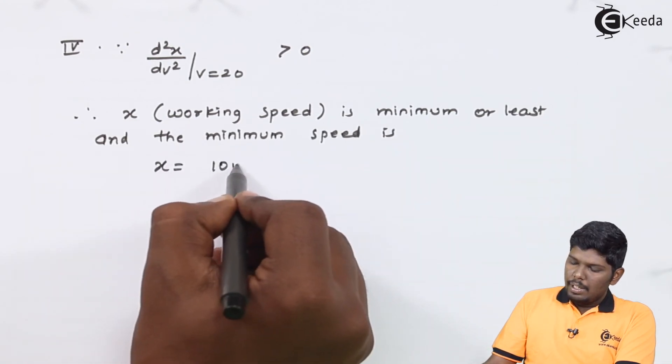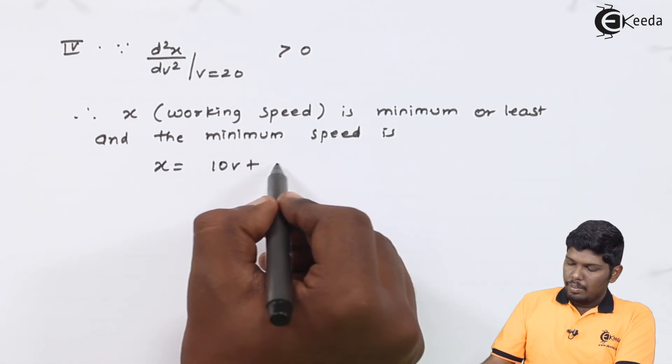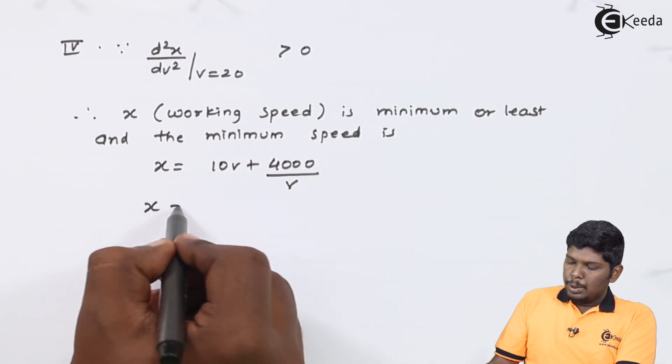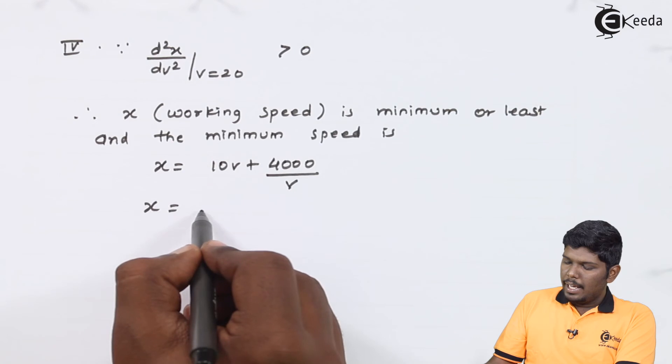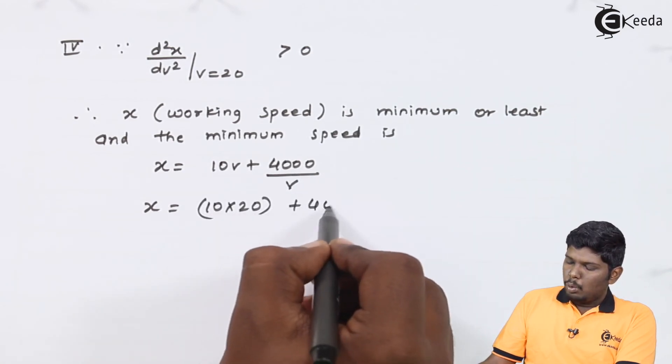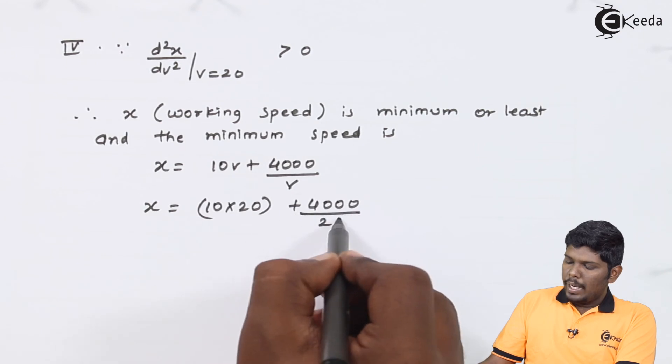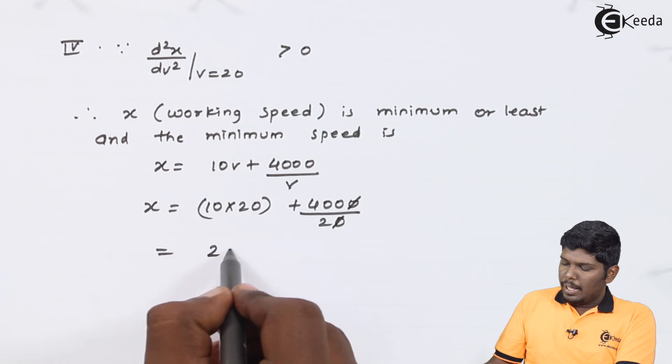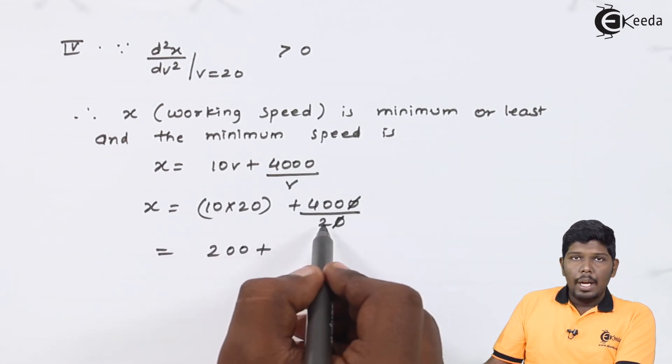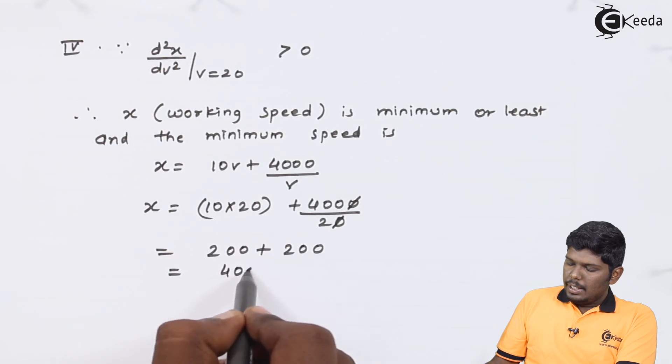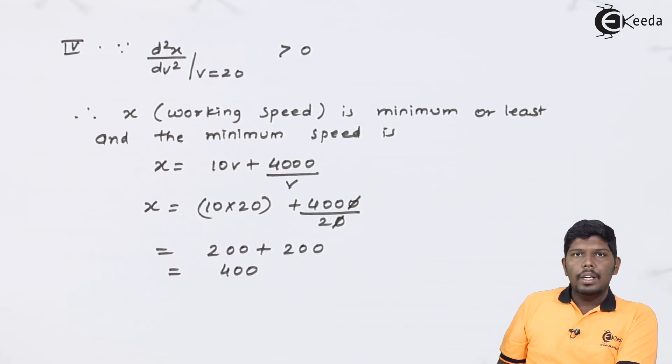Substituting V as 20, we will get 10 into 20 plus 4000 upon 20. Here we will get 10 into 20 is 200, and 4000 upon 20 is again 200. So 400 is the minimum speed of the engine.